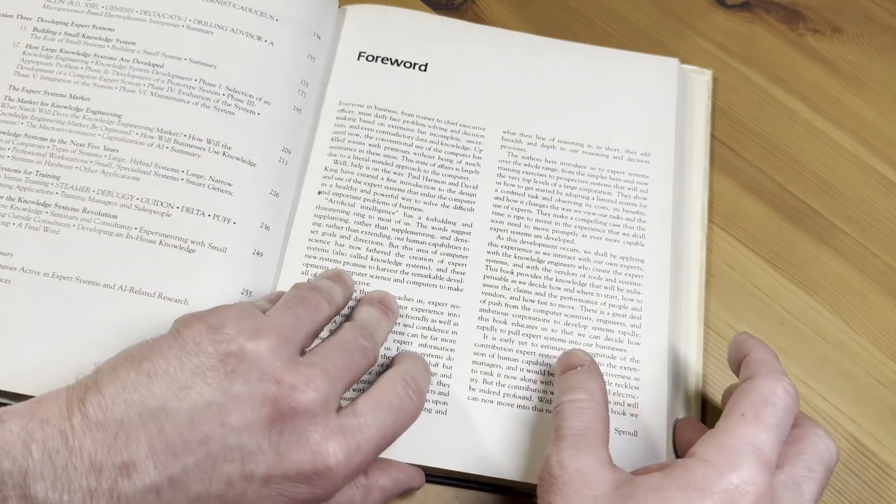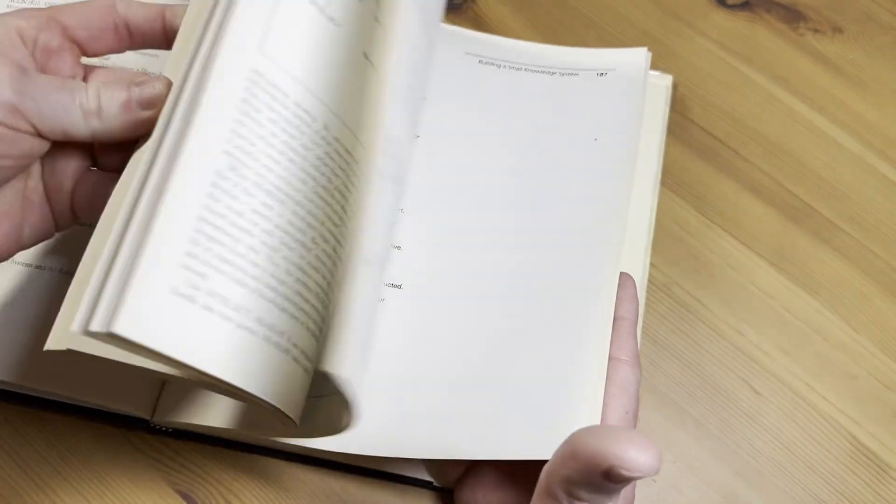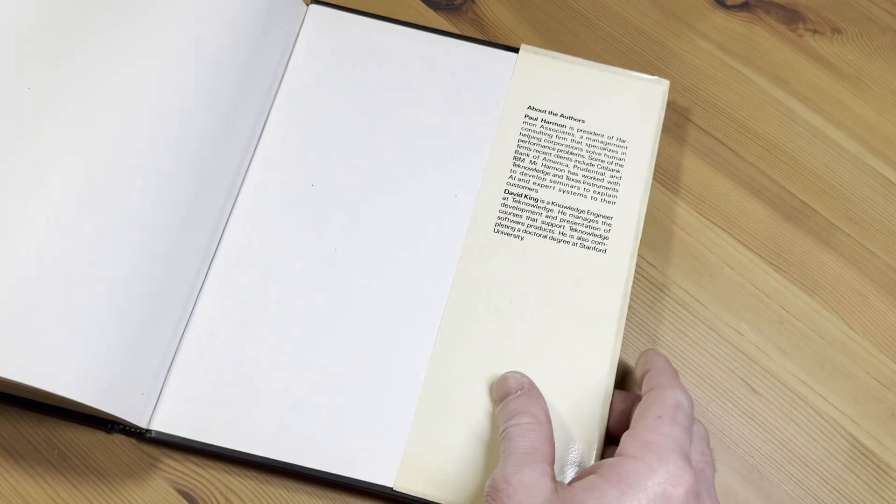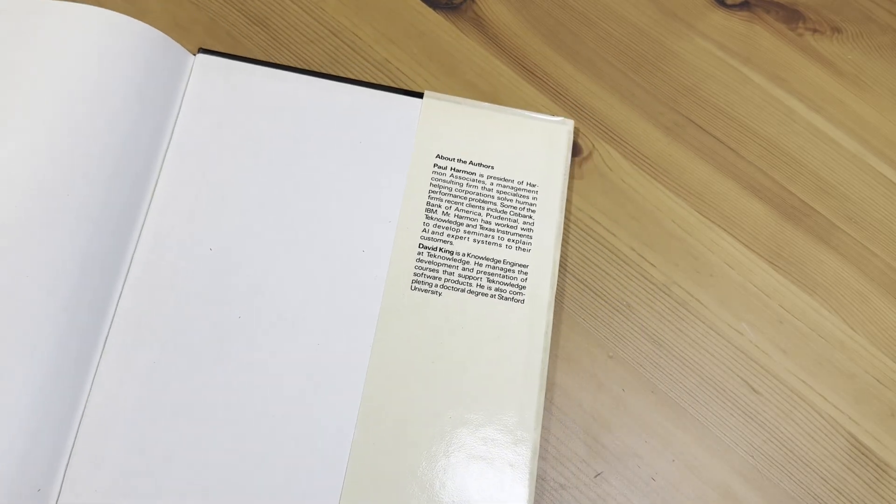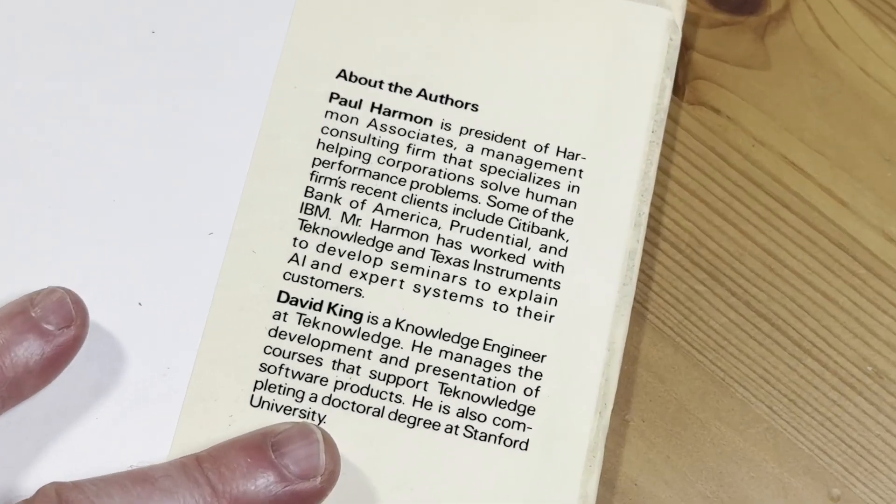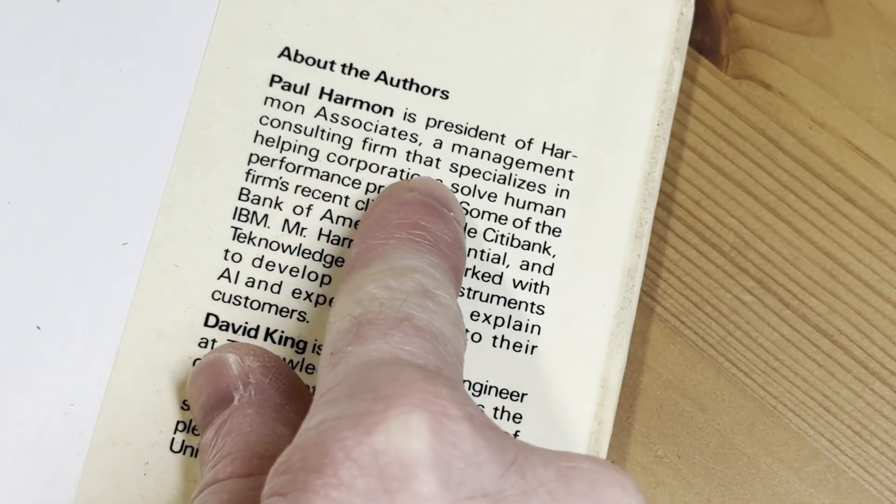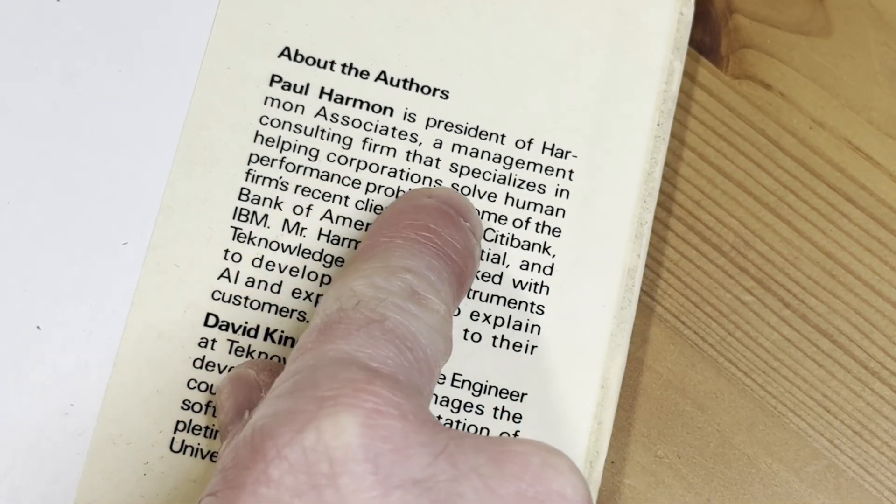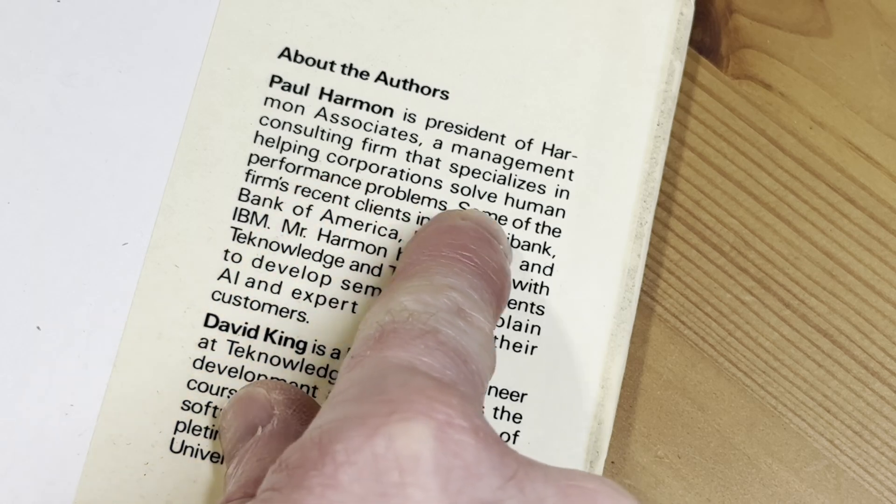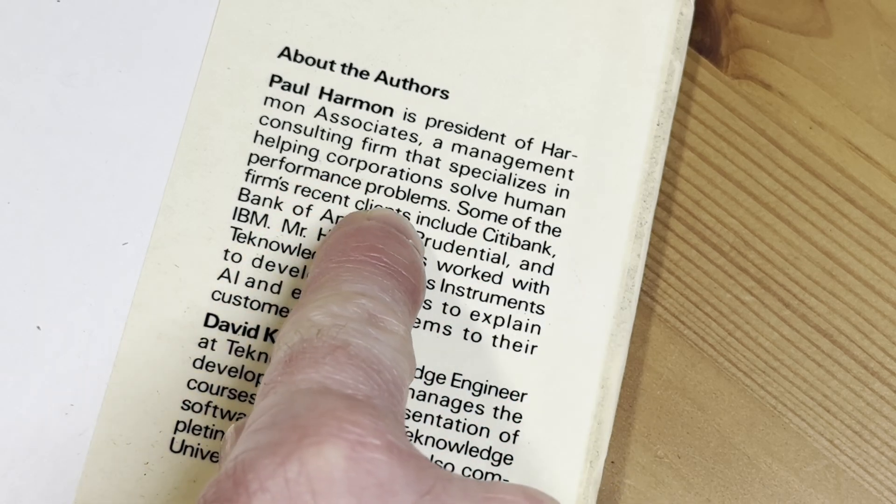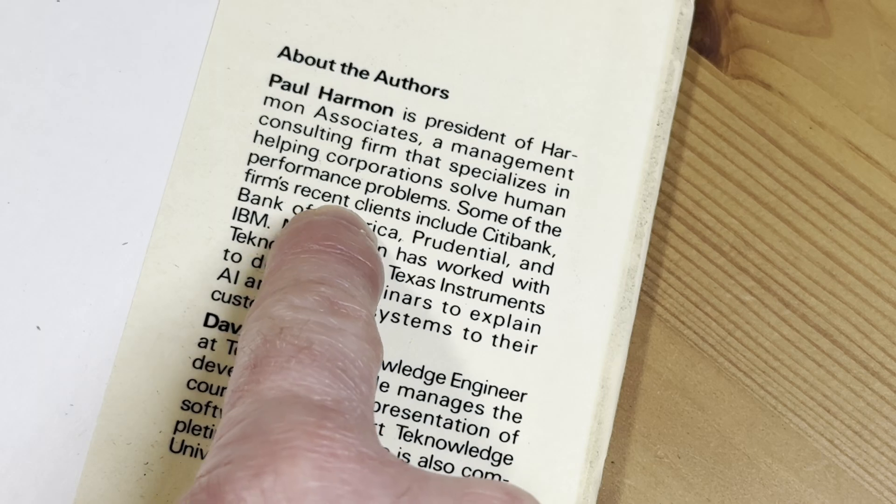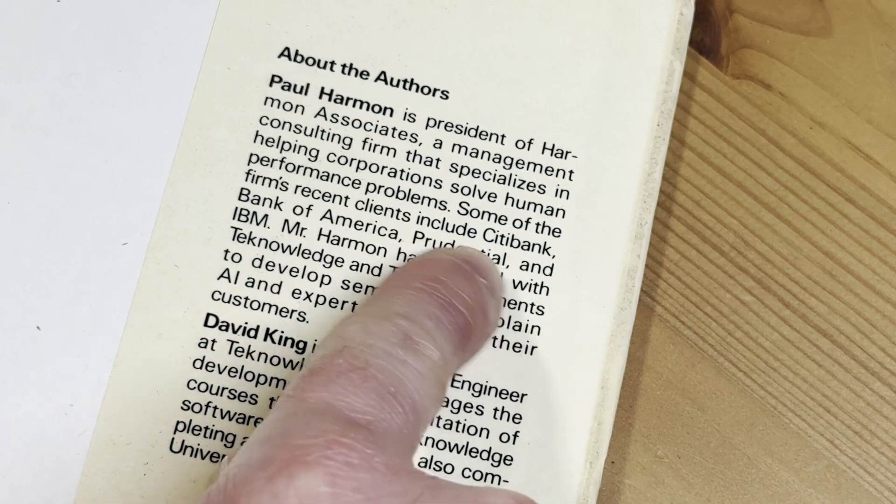And if you're wondering what this is for, let me just show you this here. So the authors. Let's just talk about them a little bit before we look at the book. So Paul Harmon is president of Harmon Associates, a management consulting firm that specializes in helping corporations solve human performance problems. Some of the firm's clients include Citibank, Bank of America, Prudential, and IBM.